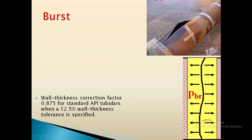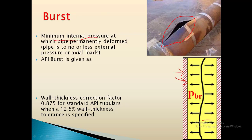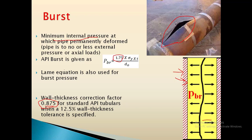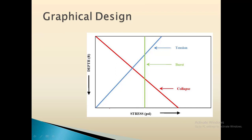Now we will see burst pressure. For burst pressure, the internal pressure is greater than the external pressure, causing the pipe to burst or deform permanently. Burst pressure is the minimum internal pressure at which the pipe permanently deforms, with no axial load or external load. API gives the formula to estimate burst pressure as: Pb = 1.75 × Yp / (D/t), where the wall thickness correction factor of 0.875 is already incorporated. You can also estimate the burst pressure using the Lamé equation.